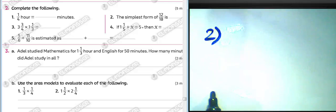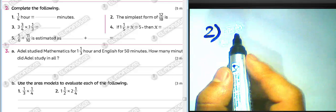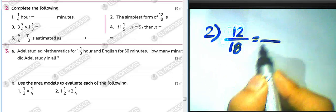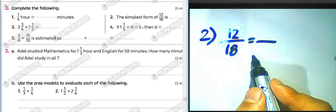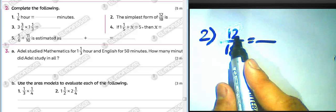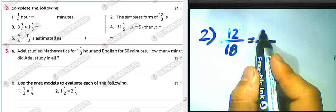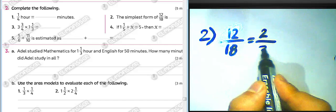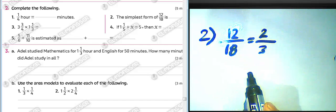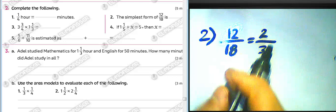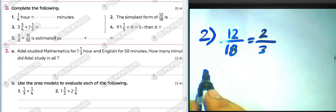Question number two: the simplest form of twelve over eighteen. Divide both by six: twelve divided by six equals two, eighteen divided by six equals three. The simplest form is two over three.